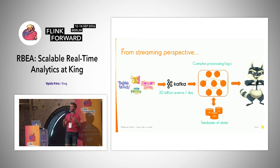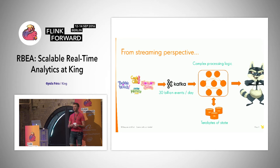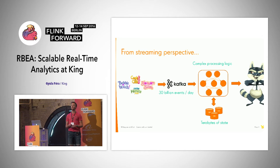Let's look at what happens from a streaming perspective. On the left side, we have the game clients sending the data. Whenever you play Candy Crush, there are a bunch of events generated — maybe you start a new game, buy some gold bars, or fail and try again. All of these events are sent from clients to the game servers, and the game servers then write them to Apache Kafka. If you're thinking about a streaming use case, this is where you would tap into this stream of data and deploy some application on this Kafka stream.